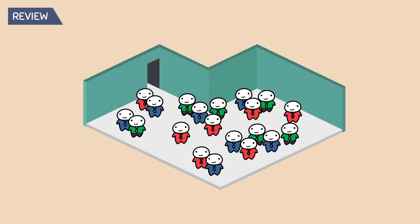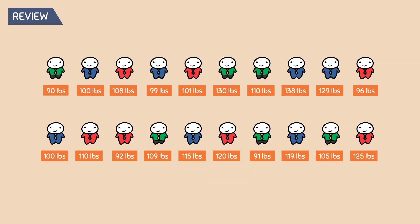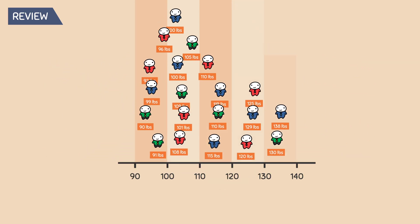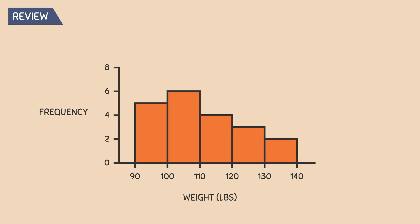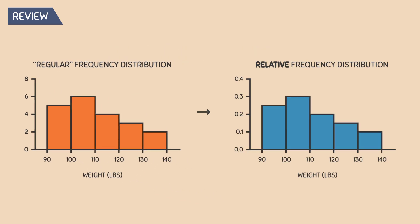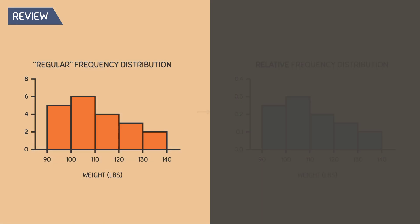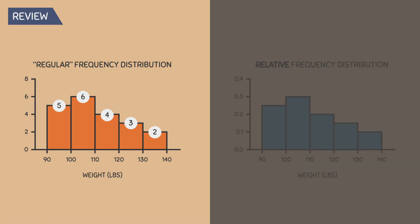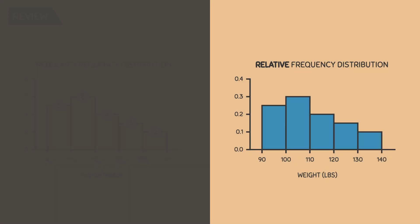Let's say we have a room of 20 people, and we record each of their weights. Then we take this information and create a histogram. Recall with any histogram, we can transform a regular frequency distribution into a relative frequency distribution. The only difference is that a regular frequency distribution tells us the number of people within a given interval, whereas a relative frequency distribution tells us the proportion or percentage of data values within that same interval.